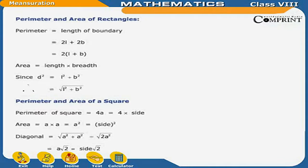Perimeter and area of square: Perimeter of square is equal to 4A, which is equal to 4 into side. Area is equal to A into A, which is equal to A squared, that is side squared. Diagonal is equal to under root of (A squared plus A squared), which is equal to under root of 2A squared, which is equal to A under root 2, that is side under root 2.